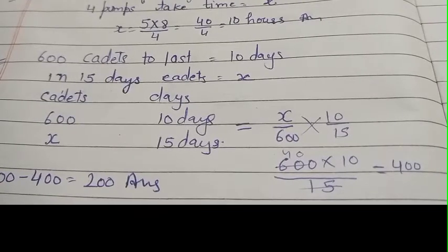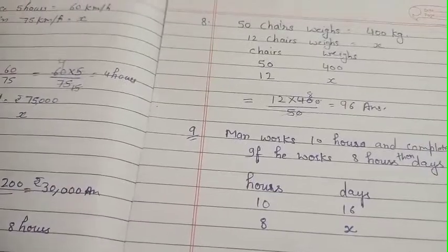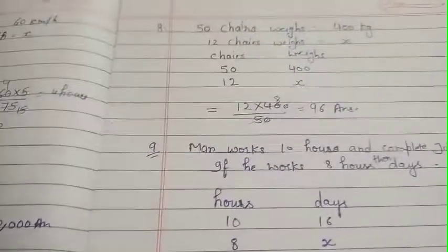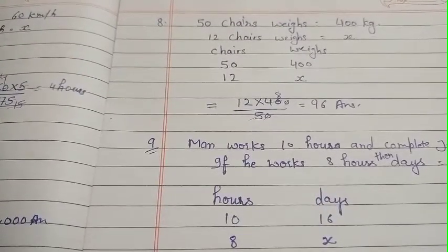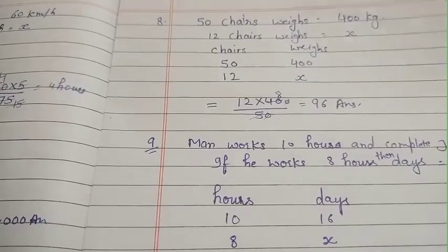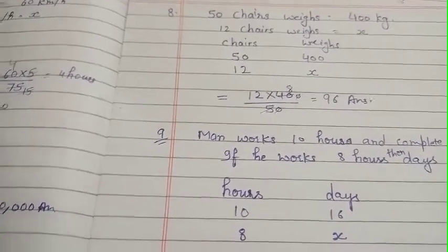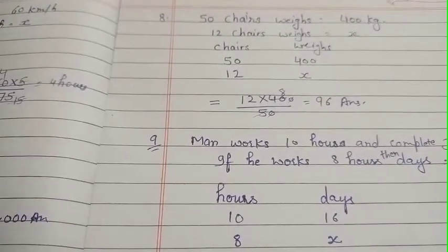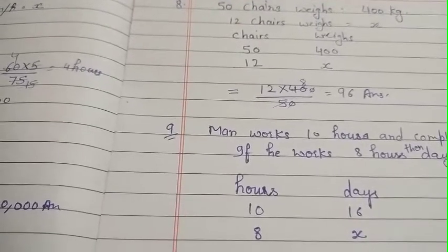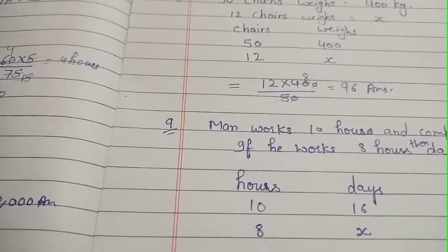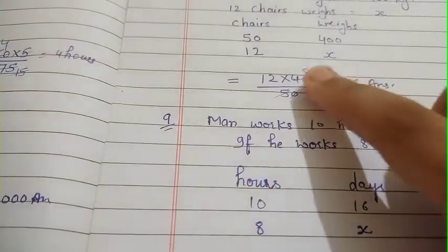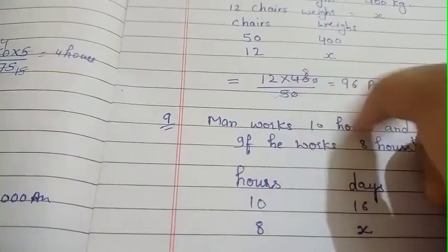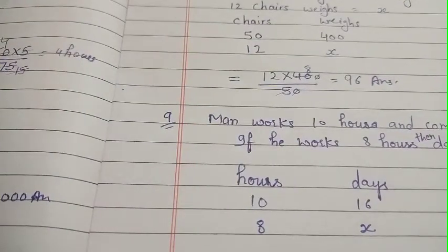Next question: total 50 chairs have a weight of 400 kg. So 12 chairs weigh x, which you don't know. Chairs are 50 upon 12, weight is 400 upon x. So x equals 12 multiplied by 400 upon 50. Zeros cut, and 5 into 40 gives 8. So 12 multiplied by 8 equals 96 kg.